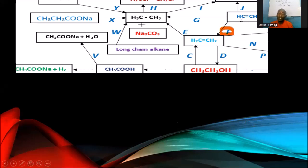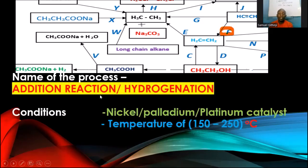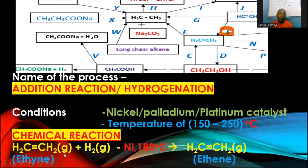Process F — coming from ethyne to ethene — is also hydrogenation, an addition reaction with one mole of hydrogen gas added. The conditions are the same as process E: nickel catalyst at around 150–250°C. You can verify this by comparing the hydrogen count before and after.